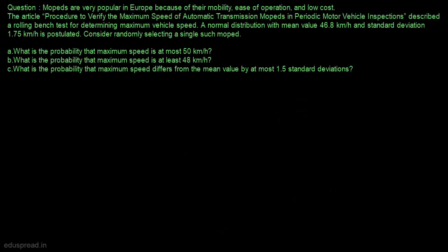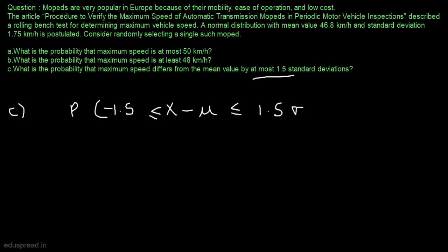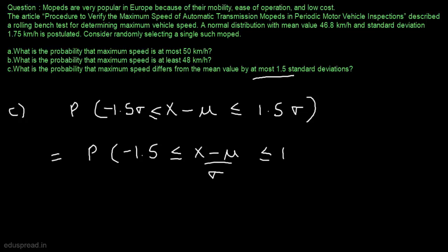Let's move to part C. What is the probability that maximum speed differs from the mean value by at most 1.5 standard deviations? That means we have to find the probability that x minus mu is less than or equal to 1.5 sigma and greater than or equal to minus 1.5 sigma, because the difference between x and mu could be positive or negative. Whatever the case, it should not be greater than 1.5 standard deviations. This is equivalent to finding the probability that (x minus mu) divided by sigma is greater than or equal to minus 1.5 and less than or equal to 1.5.